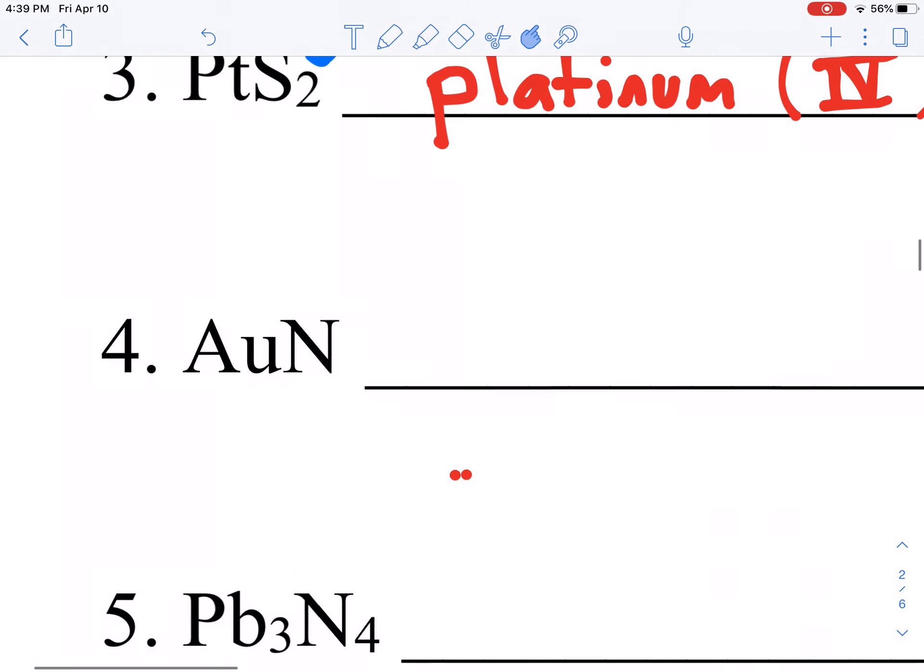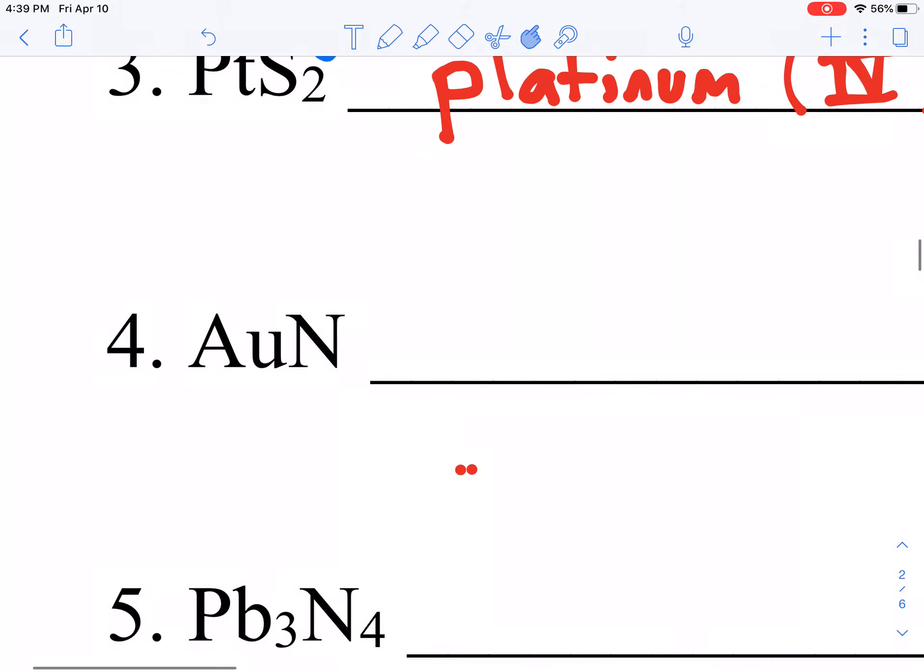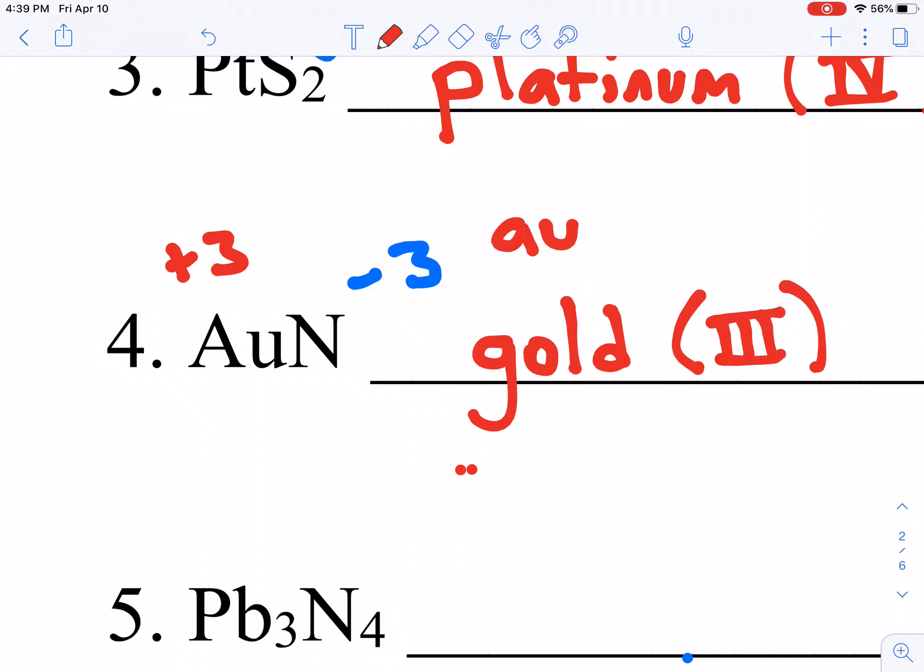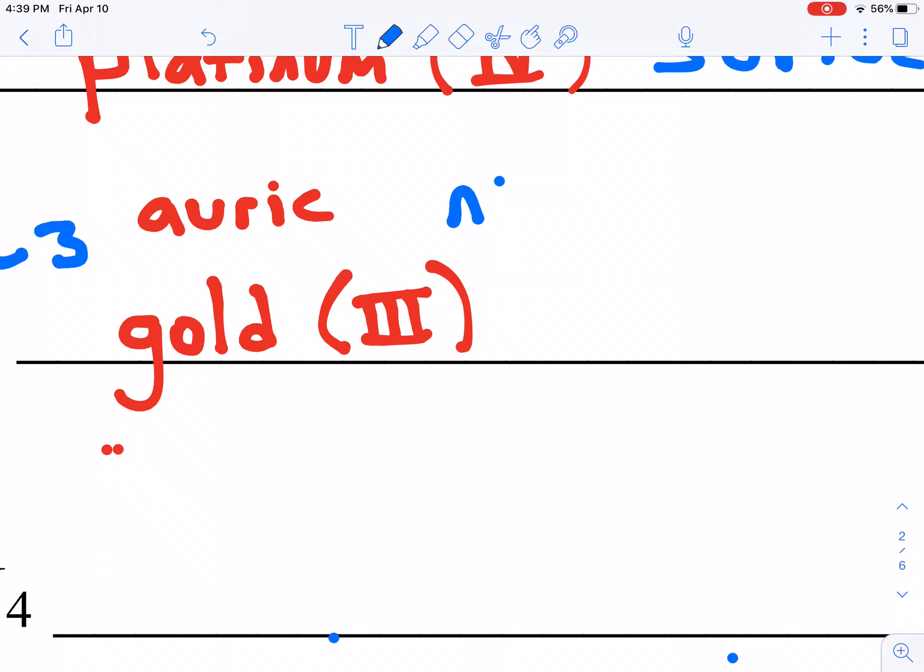Jumping down to number four. Number four has nitrogen in it. Nitrogen is a minus three charge. We're bonded to gold. If we want a neutral compound, gold must be a plus three charge. Whenever we write those together, we will have gold, Roman numeral three, nitride, but this has another name. It's auric nitride. And this would be gold three nitride.